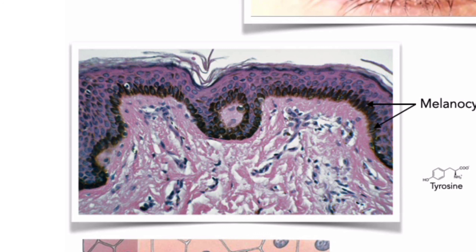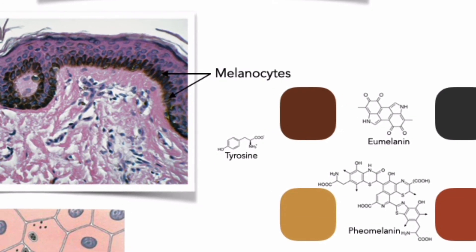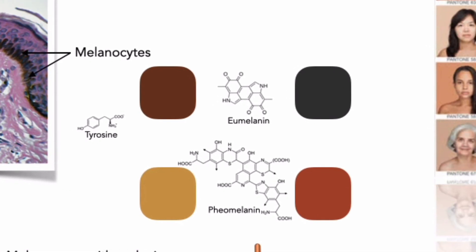The skin covering most areas of the body has approximately 1,000 melanocytes per square millimeter. The cheeks, forehead, nipples, and genital region have about 2,000 melanocytes per square millimeter. People of all skin colors produce both eumelanin and pheomelanin. The differences in skin pigmentation among individuals are due to the amount of each type produced and its delivery to the superficial cells of the epidermis.